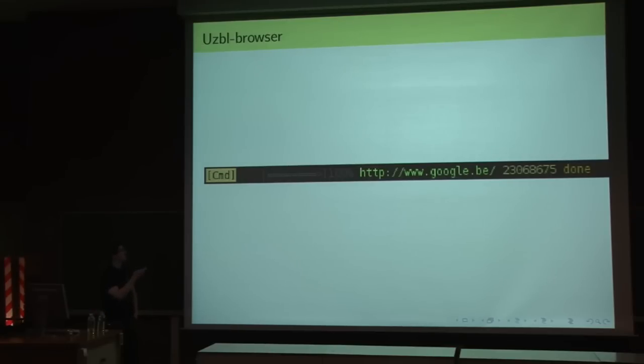The uzbl-browser takes uzbl-core and it puts some useful stuff in the status bar by default, such as which mode you're in, if you have a modal binding, a progress bar, the URL, the name of the instance, which is by default the Xorg window ID, but that's not very relevant.